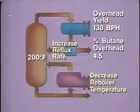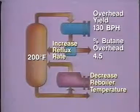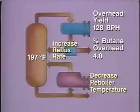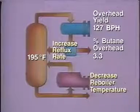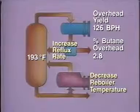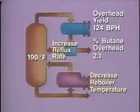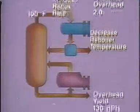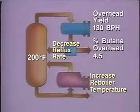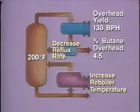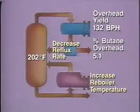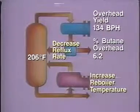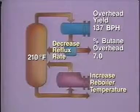Reducing the reboiler temperature or increasing the reflux rate will reduce the temperature inside the column. When the temperature falls, less heavy material rises up the tower. As a result, there is a decrease in the amount of overhead products produced as well as a decrease in the percentage of butane going overhead. We get just the opposite effect if we increase the reboiler temperature or decrease the reflux rate. Either of these adjustments will cause the temperature to rise, more heavy material is driven up the column, increasing the amount of overhead products produced and the percentage of butane going overhead.